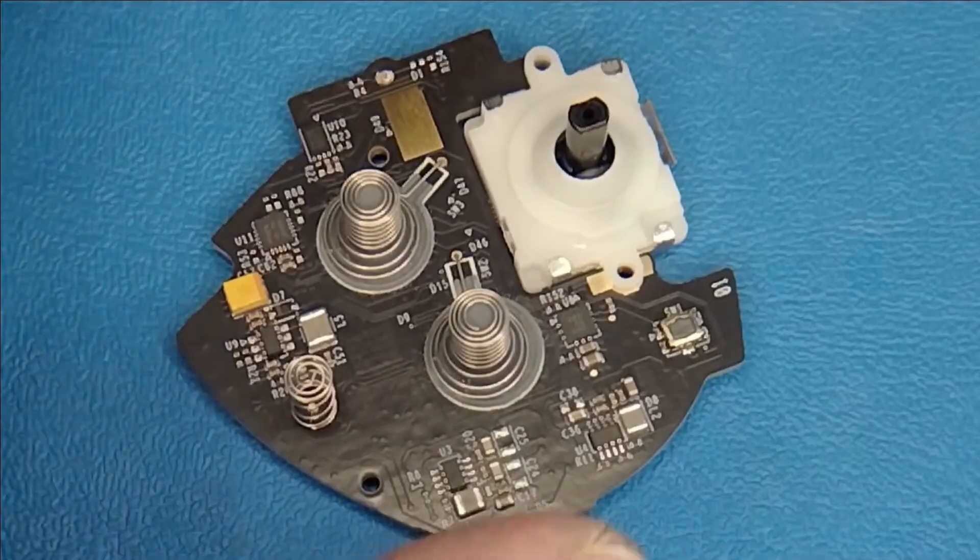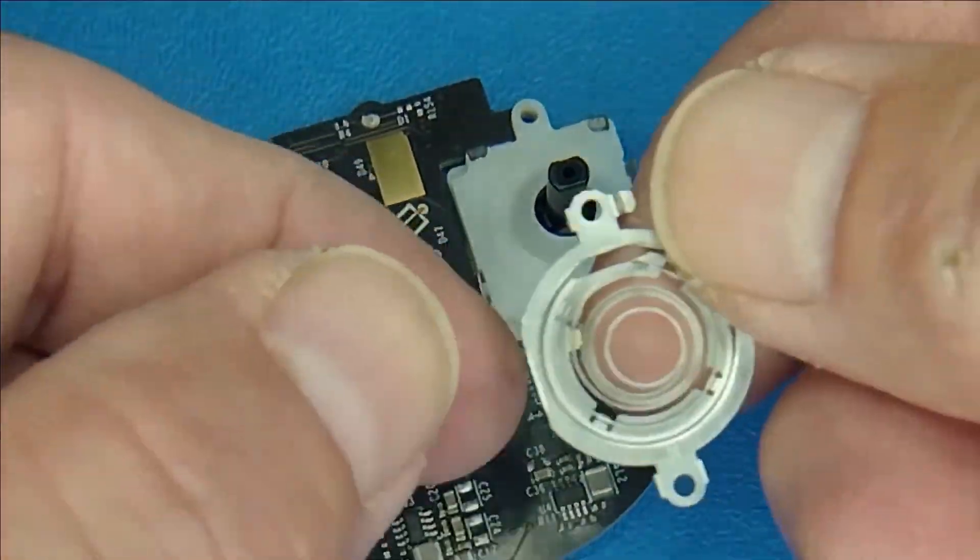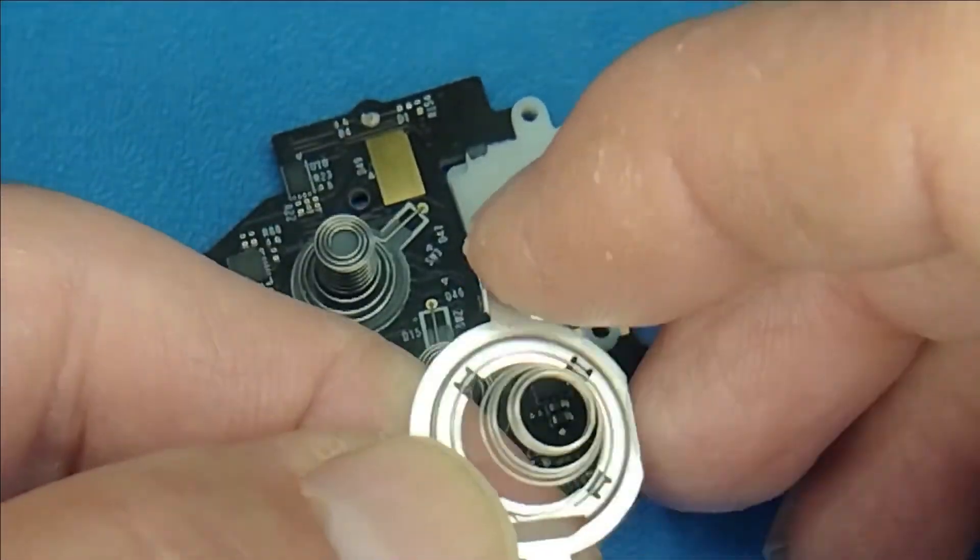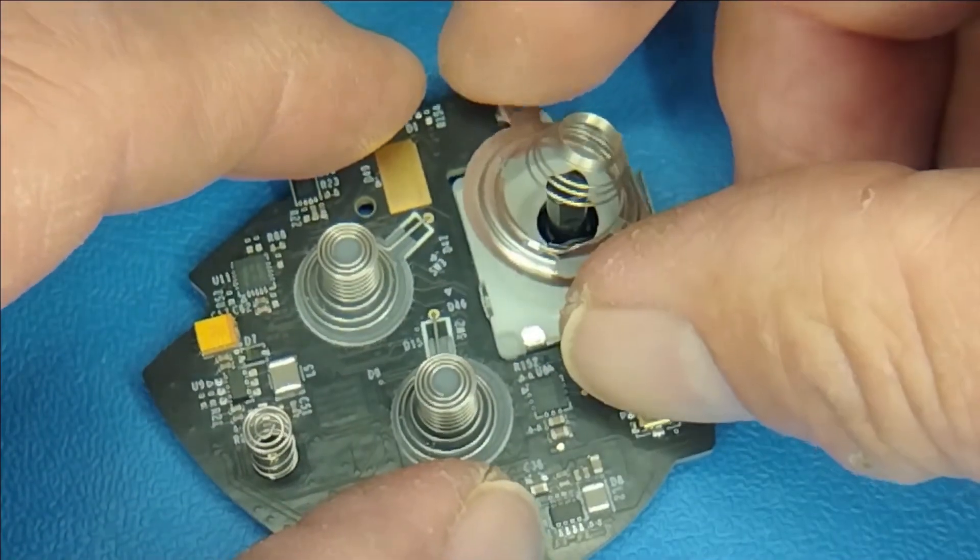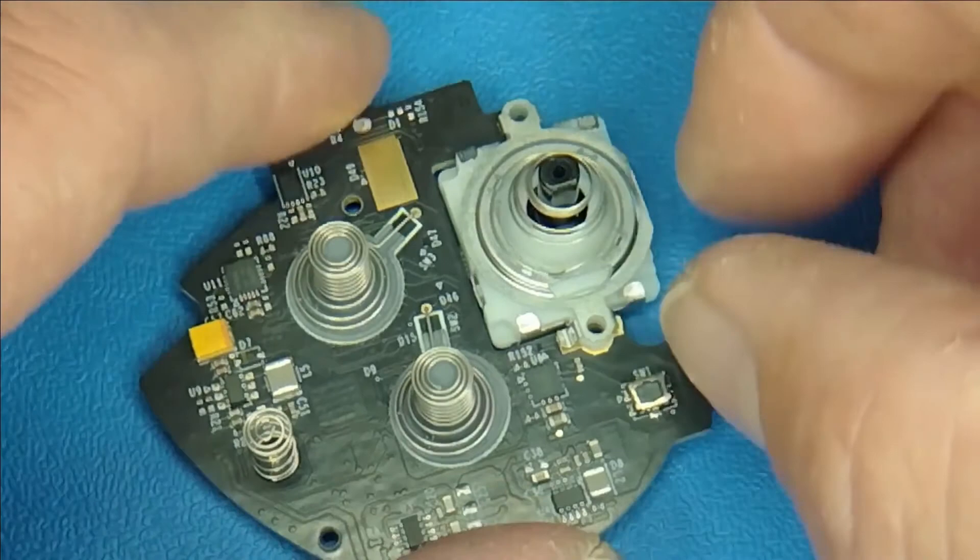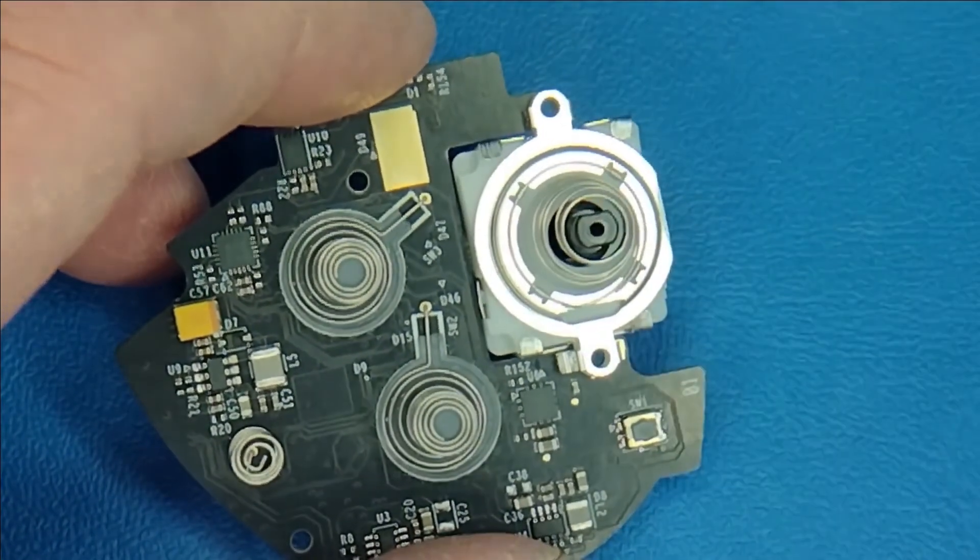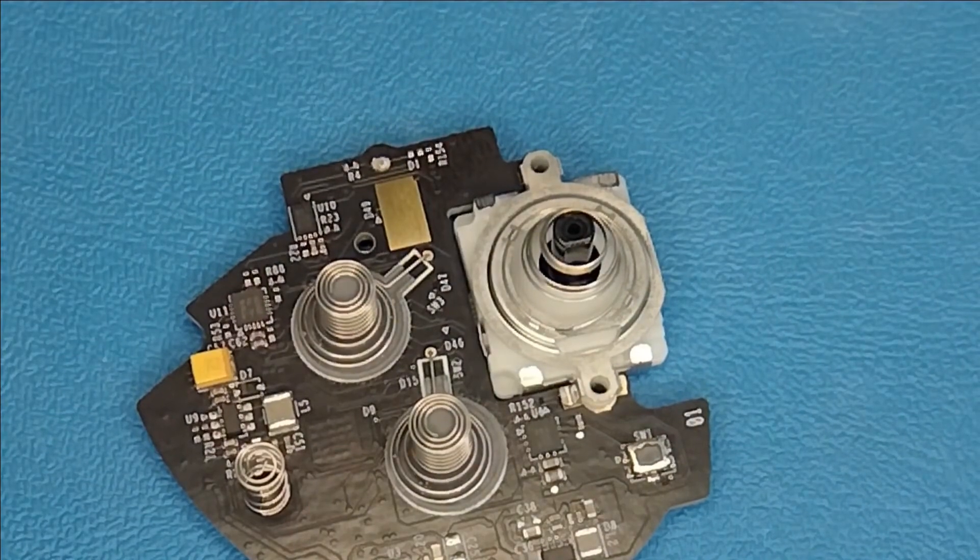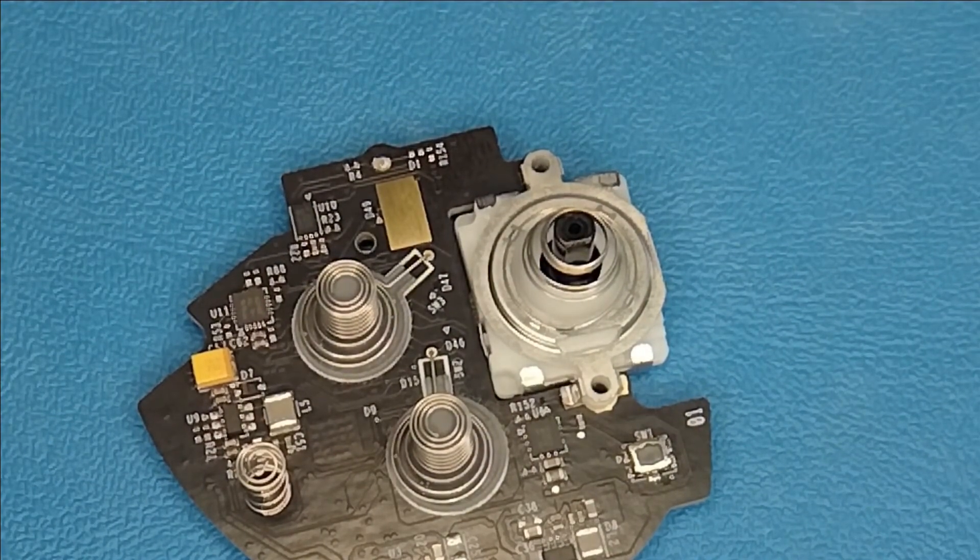And now the last thing you're going to do is put that capacitive sensor back on. You notice it's got a flat part on one side. And that's the side it goes on where it's closest to the edge. Just like that. And be careful because it's just being held with that ribbon cable for the rest of this. And now you're going to go back to the assembly procedure and put it all back together.